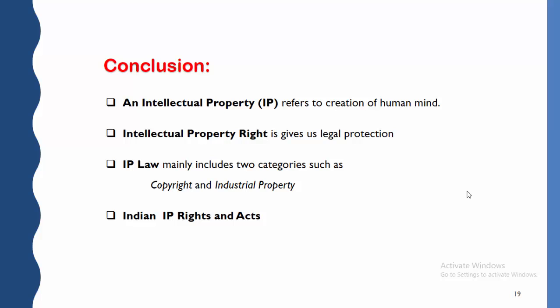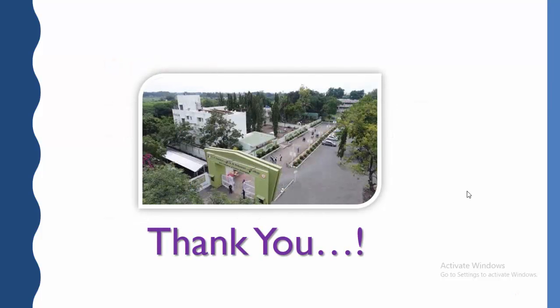To conclude, intellectual property refers to the creation of a human mind. Intellectual property rights give legal protection to the organization or company for what humans or organizations have created. IP law is mainly categorized into copyright and industrial property. Copyright covers artistic work and literary work. Industrial property covers patents, trademarks, industrial designs, and geographical indications. We also studied the Indian IP rights and the acts related to India. IP is the human creation of the mind; IPR is the right that gives legal protection.